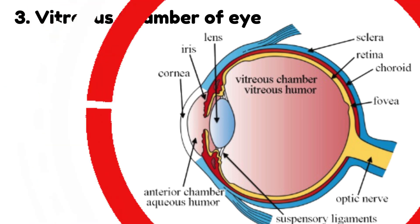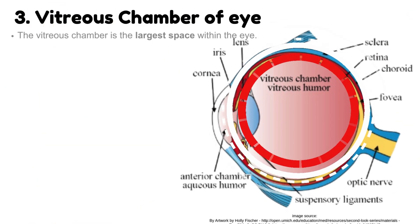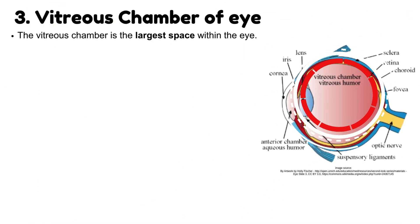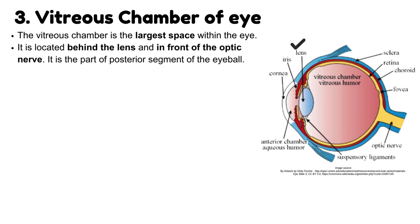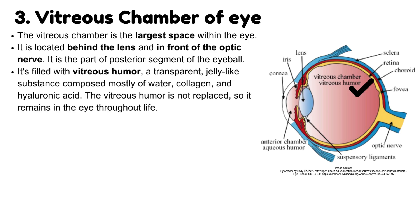Number 3: Vitreous chamber of the eye. The vitreous chamber is the largest space within the eye. It is located behind the lens and in front of the optic nerve, and is part of the posterior segment of the eyeball. It is filled with vitreous humor, a transparent, jelly-like substance composed mostly of water, collagen, and hyaluronic acid. The vitreous humor is not replaced, so it remains in the eye throughout life.